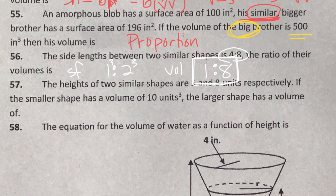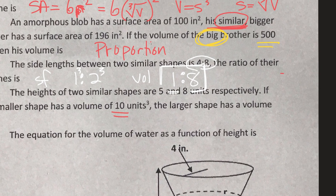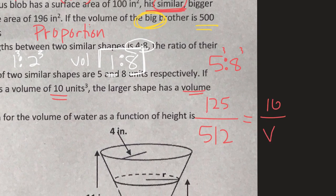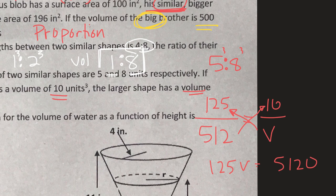The heights of two similar shapes are 5 and 8 units respectively. If the smaller shape has a volume of 10, then the volume of the larger shape is... We have a 5 to 8 scale factor. Cube them to get the volume ratio: 5 cubed is 125, 8 cubed is 512. So 125 over 512 equals 10 over V. Cross-multiply: 125V equals 5120. Divided by 125, the volume of the larger shape is 40.96 cubic units.